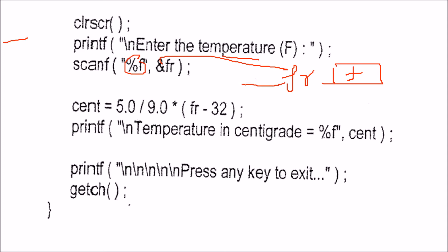Now take this fr and use this formula: 5.0 by 9.0 into fr minus 32. This will be cnt. That will be centigrade.